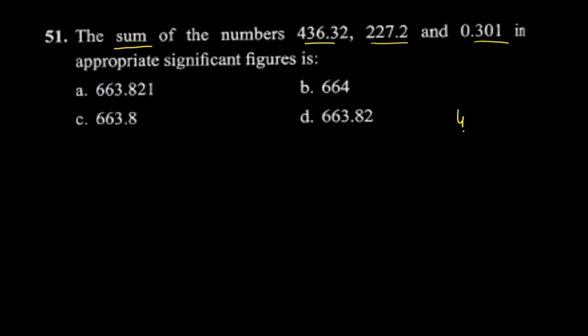Add the numbers: 436.32, 227.2, and 0.301. If you add them together - 1, 2, 8, 3, 6, 6, 3 - you get 663.821. Students might mark this as the correct answer, but we need to consider the rules for addition and significant figures.